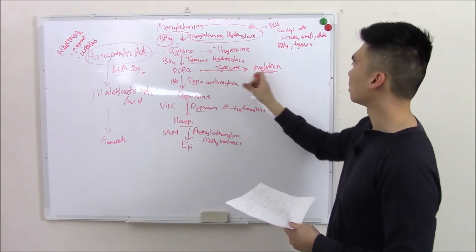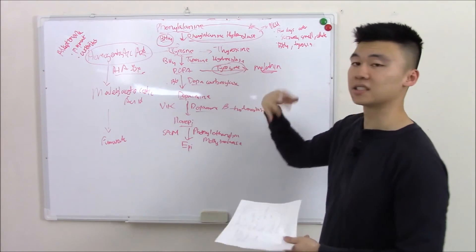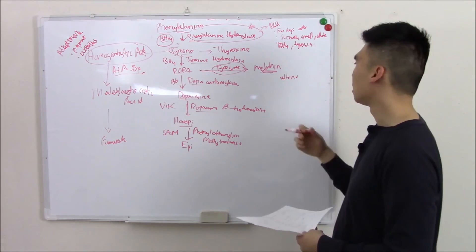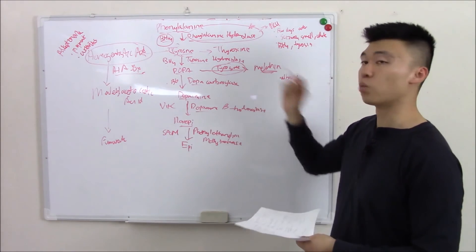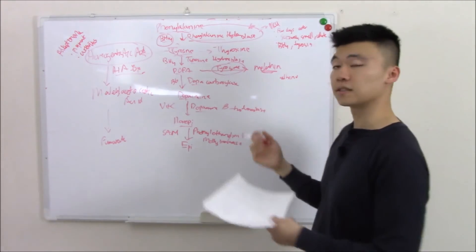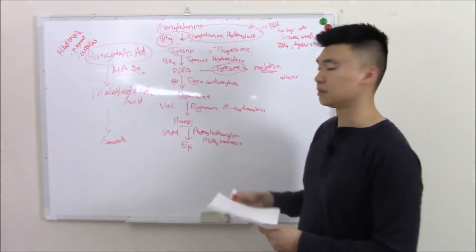DOPA to melanin via tyrosinase. If you have a deficiency in that, you're albino. There are other causes of albinism, but this is just one of them. Know that enzyme? Tyrosinase. And that actually does it for what can go wrong in the pathway.